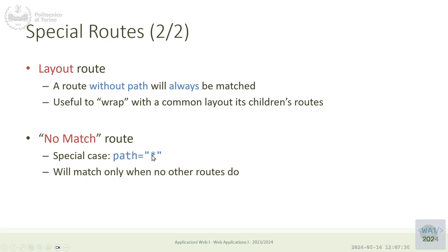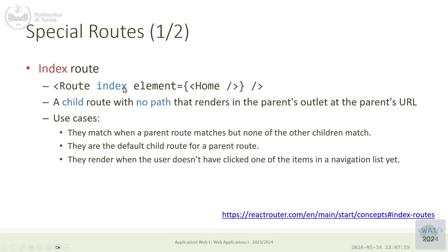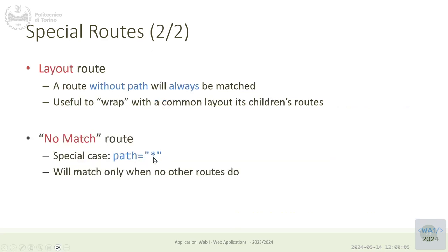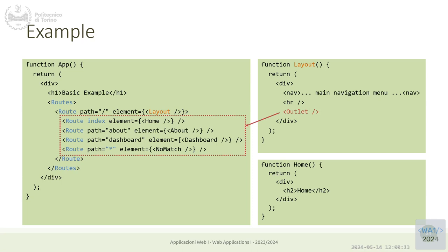Another special case is the no-match route: when everything else fails, we can use the asterisk. This should normally render an error page or some 'I didn't expect this' message. It's different from the index route — index matches if no additional string is provided, while the asterisk matches if some string is provided but it doesn't match any other child.